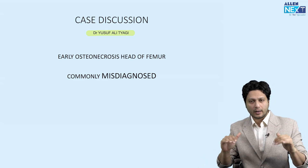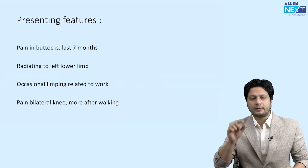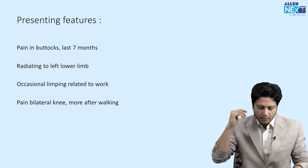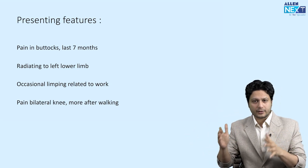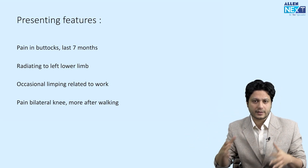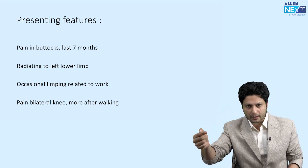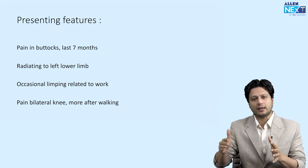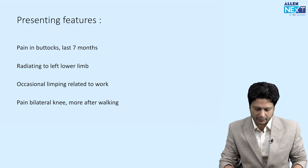The patient came to us recently with a history of buttock pain for the last 7 months, which was radiating to the left lower limb. On asking with leading questions, he also had a history of occasional limping related to work, and knee pain more associated with relative activities.